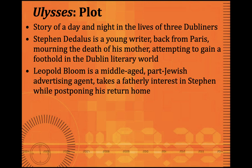Leopold Bloom is a middle-aged, part-Jewish advertising agent living in a Dublin that is highly anti-Semitic. Both Stephen and Bloom are outsiders in Dublin. The story starts at Bloom's house at 7 Eccles Street, where he lives with his wife Molly. He has a daughter whose letter he reads, and his son has died. As an advertising agent he is seen canvassing for advertisements. He is traveling around Dublin doing his chores and postponing his return home, because he knows his wife is probably having a sexual affair with her manager and does not want to arrive too soon.